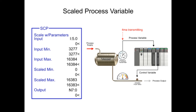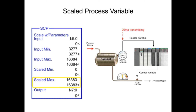For example, when the minimum pressure of 0 PSI is measured, a scaled value of 0 is transferred to the SCP output, and when 100 PSI is measured, a scaled value of 16,383 is transferred to the SCP output.